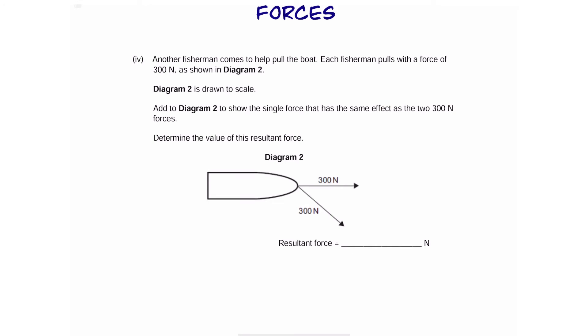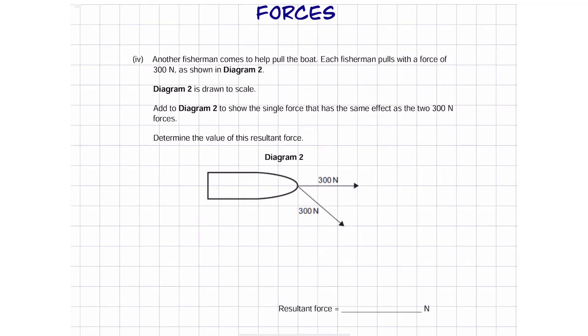Now for this kind of question, we're going to use a grid. Let's move this down a little bit so there's more space for us to work on. So the fisherman called his friend, and now we have two fishermen pulling this boat. We can see that the arrows represent the force exerted by each fisherman.